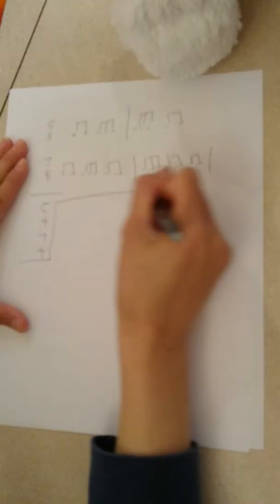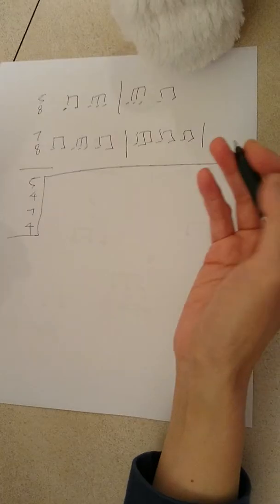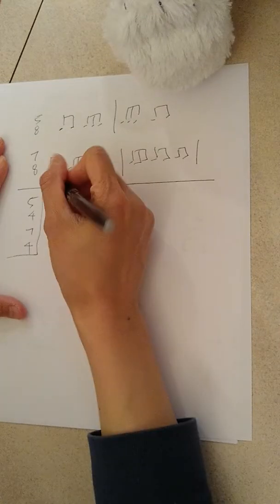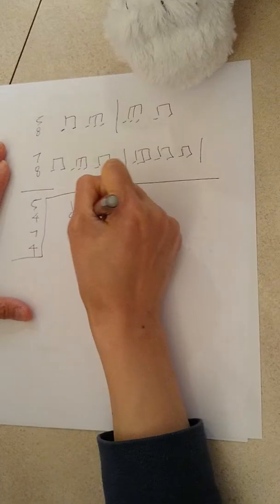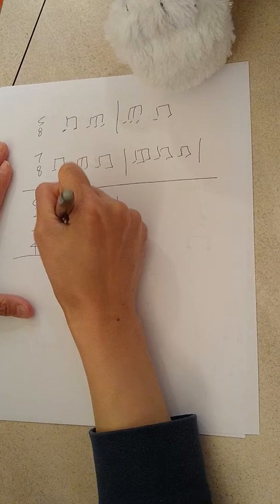Okay. Sometimes ABRSM, they ask you to write differently. So then they might give you, say, okay, turn this into a compound meter.